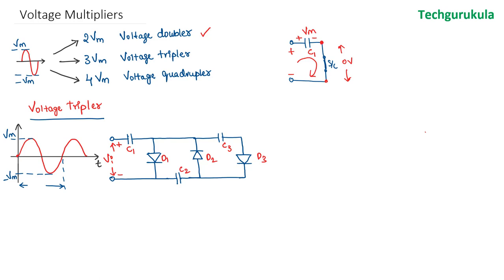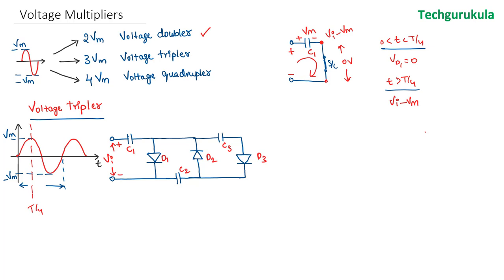Once the voltage reaches Vm, the voltage at the P side of the diode would become Vi minus Vm. During the interval from 0 to T/4, the voltage across diode D1 is 0. When T is greater than T/4, the voltage across the diode would be Vi minus Vm, which makes the diode reverse biased. Because once the input voltage decreases below Vm, Vi minus Vm becomes negative, making D1 off.